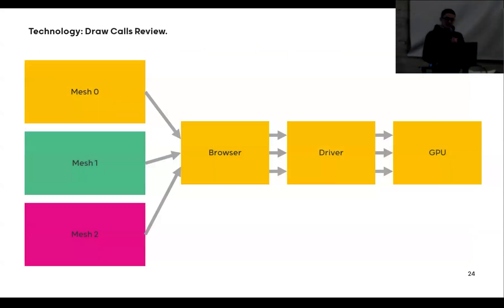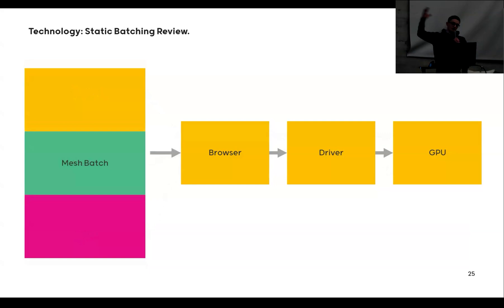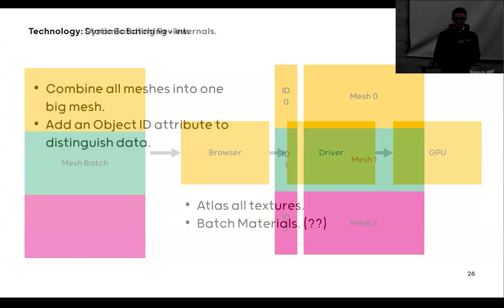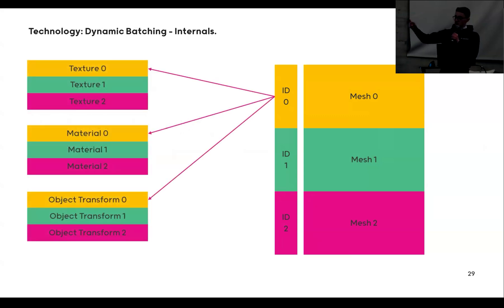So what we'd actually like to do is more like something like this: we want to combine everything and then just do one single draw. Now if you do that, you also need to atlas all the textures and also batch all the materials to make that happen. We combine all the meshes into one big mesh and then add a little ID attribute to be able to still distinguish which vertex data comes from which object, to then later use this object ID data to look at the texture, look at the material, and also the transformation.